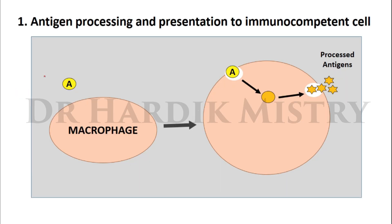Going through the humoral and cell-mediated immune responses step by step — the first step is antigen processing and presentation to the immunocompetent cell. The macrophage is the first cell to encounter the antigen. Endocytosis of the antigen takes place; the macrophage processes the antigen and releases it back into the body as processed antigen. This is the first step in both humoral and cell-mediated immune responses.